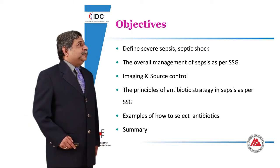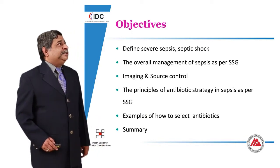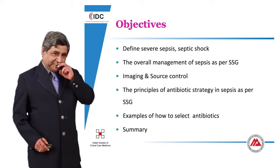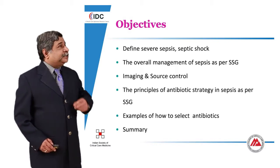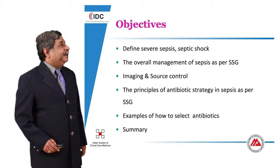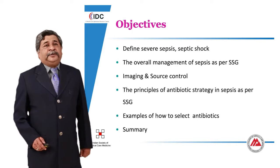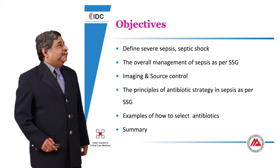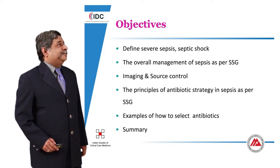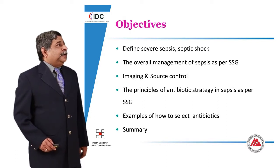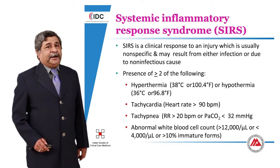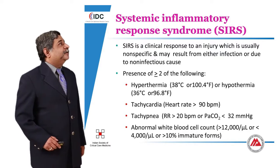The objectives for this talk are: we will define severe sepsis and septic shock, the overall management of sepsis as per the surviving sepsis guidelines, the importance of imaging and source control, the principles of antibiotic strategy in sepsis as per the surviving sepsis guidelines, a couple of examples of how to select the antibiotic, and then I will summarize the topic.